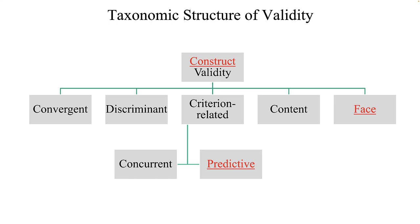In this course the thing being measured is job performance and various predictors of it. Face validity answers the question: Do these things on the test appear to measure what they are supposed to measure on their face? That was a very short, sweet overview of the taxonomic structure of validity. Let's explore each of these types in greater detail on the following slides.